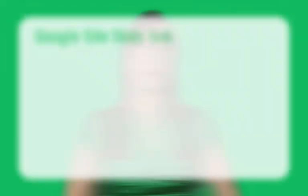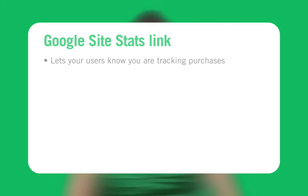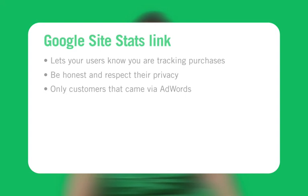The Google Site Stats link is an important feature of the program, providing disclosure to your site's users that you are tracking their purchases and a way to get additional information about what is being tracked and how that information is used. Google believes that it is important to be honest with and respect the privacy of users being tracked. Please note that only customers who have clicked on an AdWords ad to get to your site will see the Site Stats link.